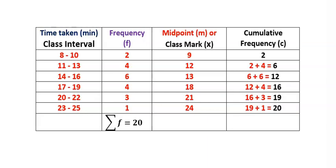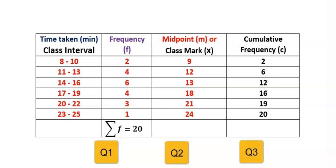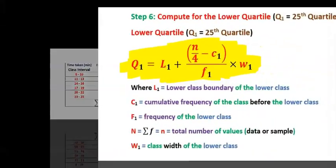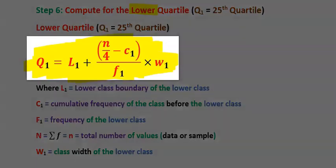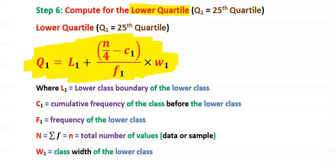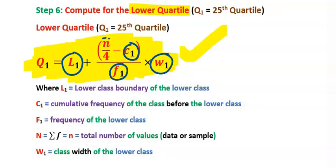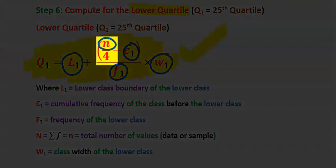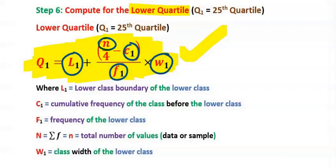Now that we have completed the cumulative frequency column, the next step is to compute for our lower quartile, middle quartile, upper quartile, and interquartile range. Step six: compute for the lower quartile using this formula. From the frequency distribution table, we are going to find L1, C1, F1, W1, and also N. For the lower quartile, we use N over 4.